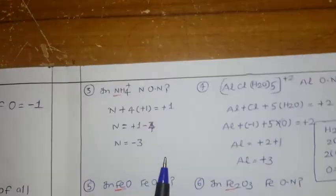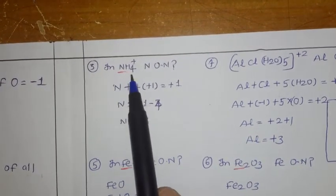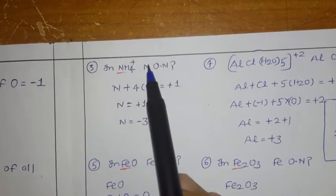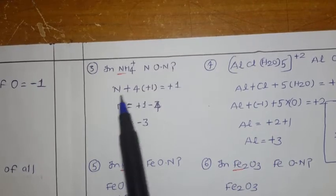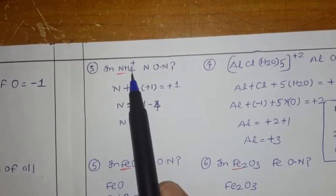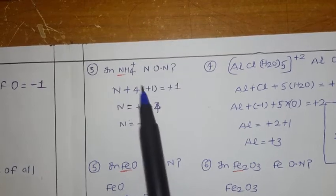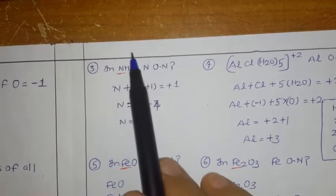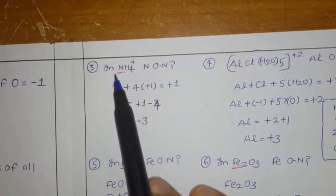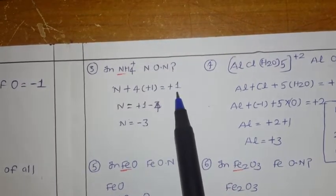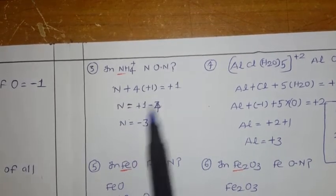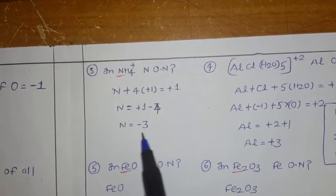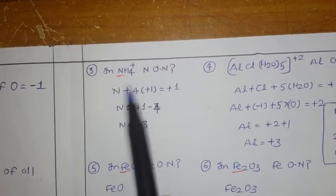In NH4 plus, what is the oxidation number of nitrogen? Assume nitrogen as X. X plus 4 times plus 1 (hydrogen's general oxidation state) equals plus 1 (charge of ion). Simplifying: X plus 4 equals plus 1, so X equals minus 3. Nitrogen oxidation number in the ammonium ion is minus 3.